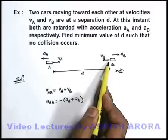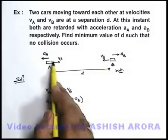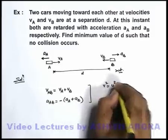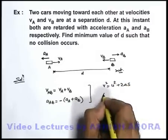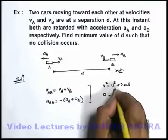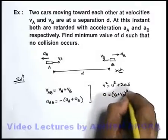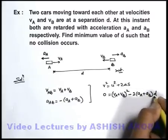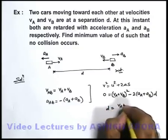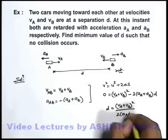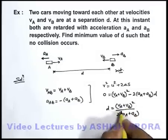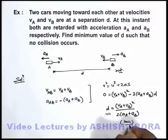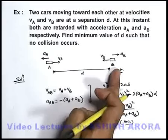We want that just before touching or colliding with B, the velocity of A should become zero with this retardation. Using the equation v² = u² + 2as, final velocity of A should be zero, initial relative velocity is v-A plus v-B, acceleration is negative 2(a-A plus a-B), and the distance to cover is d. So the value of d works out to (v-A plus v-B)² divided by 2(a-A plus a-B). If the distance is greater than or equal to this value, no collision will take place. This is the minimum value of d — if d is more than this, car A will come to rest before touching car B.